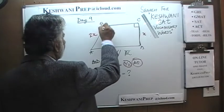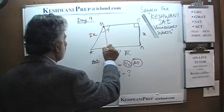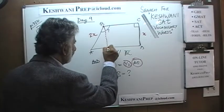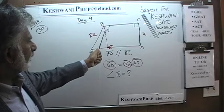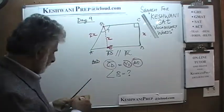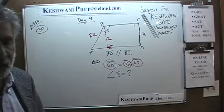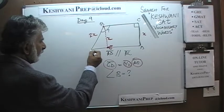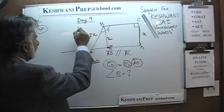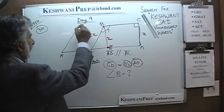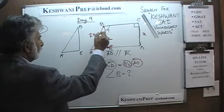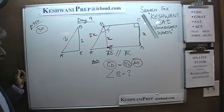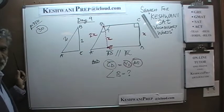Now let's drop a perpendicular. If we drop a perpendicular, what we notice is that if CD is X, let's call this point E — then B to E must also be X. Do you recognize something? We should immediately recognize once we have done this. I am going to reproduce triangle ABE. What we have is A to B is 2X and B to E is 1X. Do you recognize now? It is a 30-60-90 triangle.